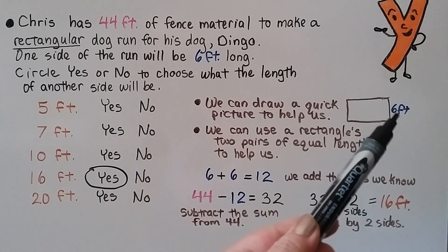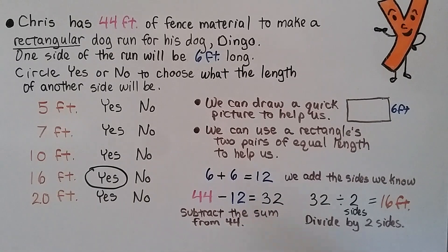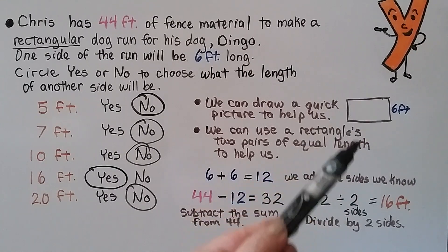That means we have a side length of 6 feet, another side length of 6 feet, and a 16 and a 16. So can 5 feet be one of the other sides? No. If you said no, you're right. Can 7 feet be one of the other lengths? No. It's a rectangle and we've only got 6 feet and 16 feet for our answers. So if you said no, you're right. So because we know the side lengths are either 6 feet or 16 feet, we also know that 10 feet is a no and 20 feet is a no. We have a pair of 6 foot lengths and a pair of 16 foot lengths.